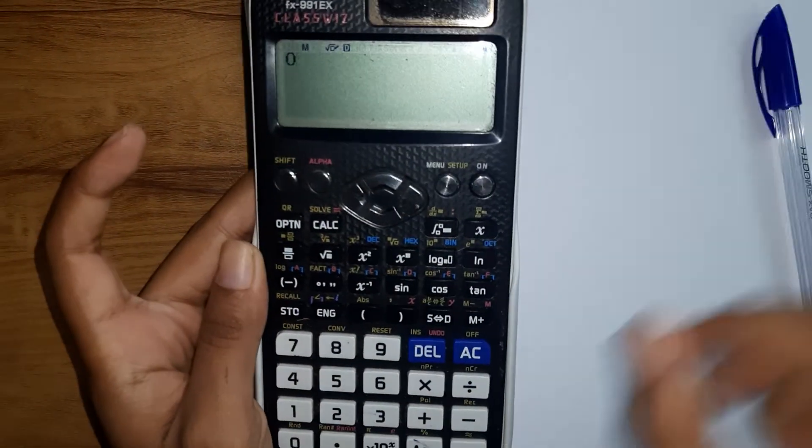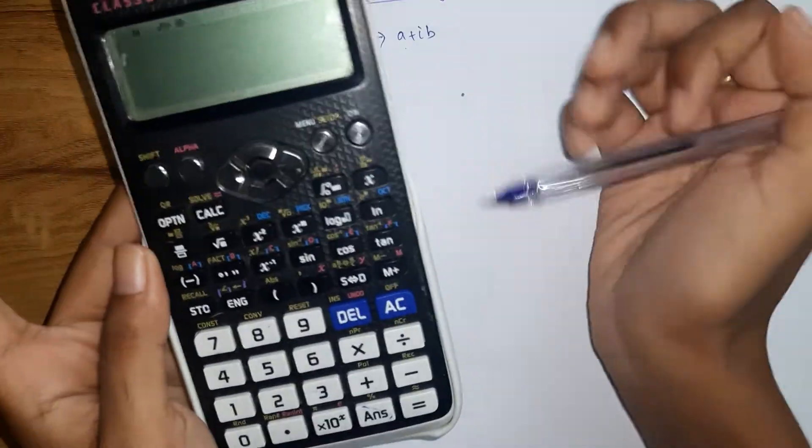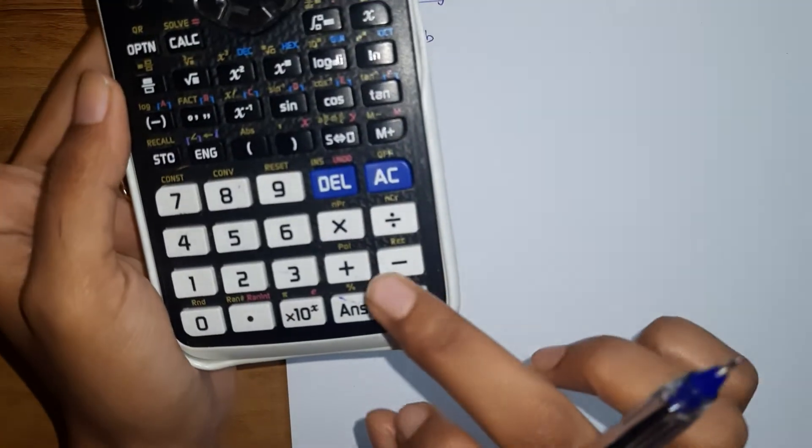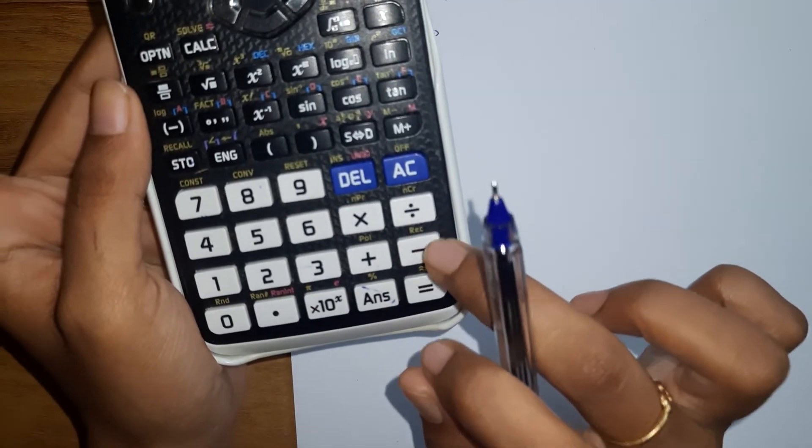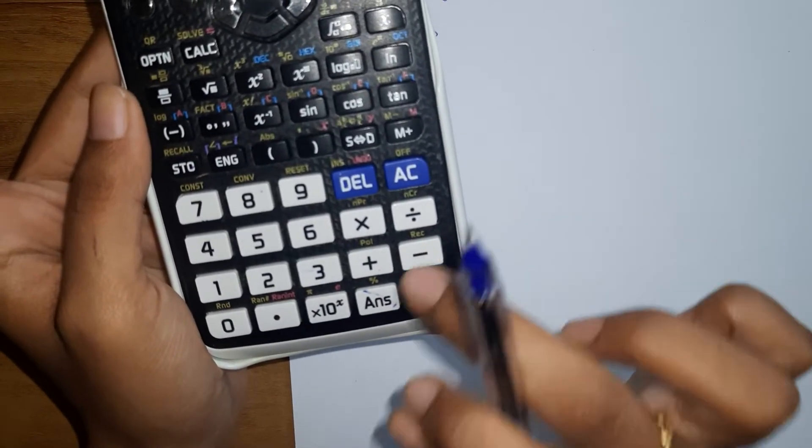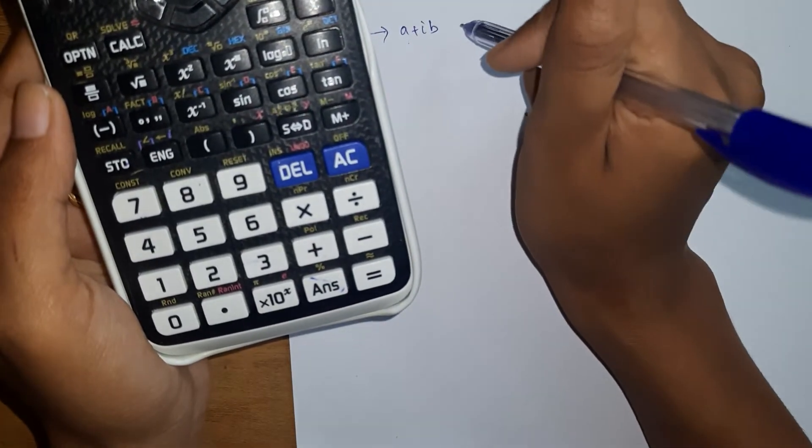Let's see. So first, as usual, what we need is rectangular form, right? So here in the calculator we can see 'rec' means rectangular form, and 'pol' means polar form. Now our result should be in the rectangular form, right?